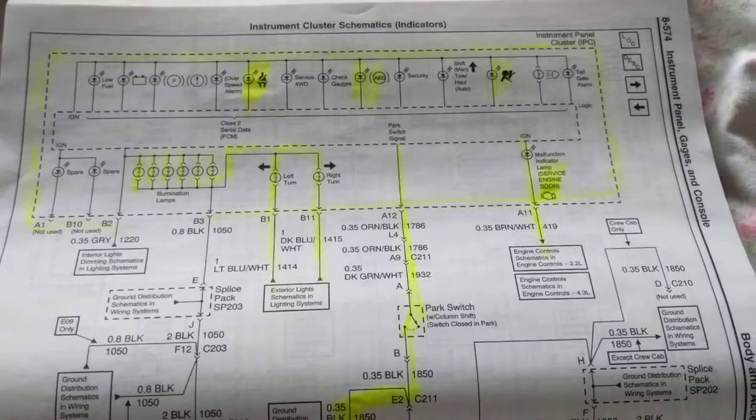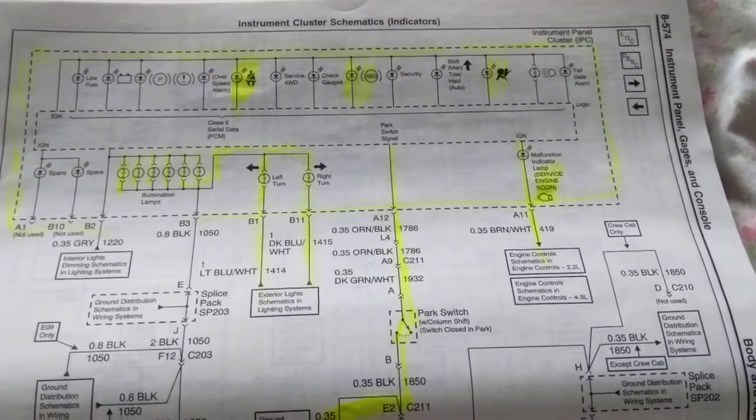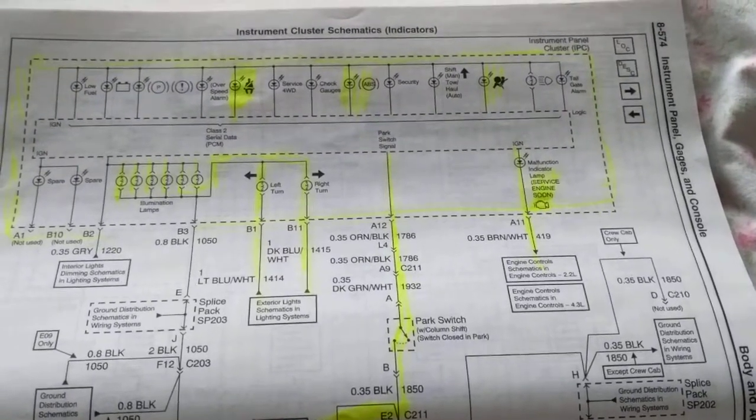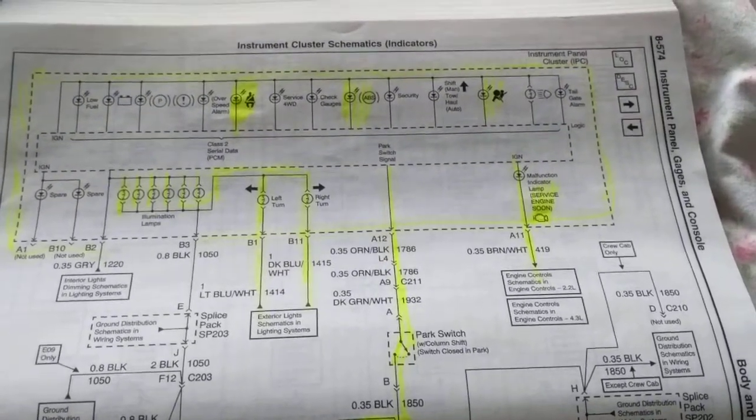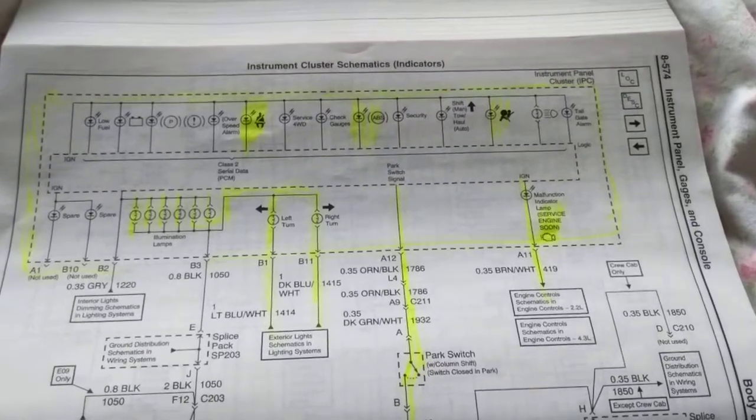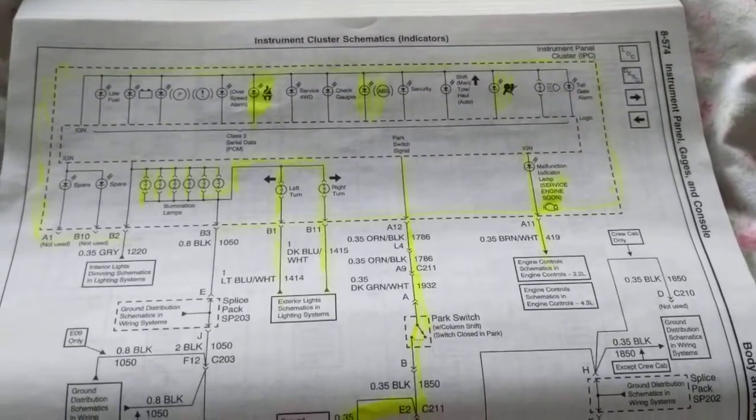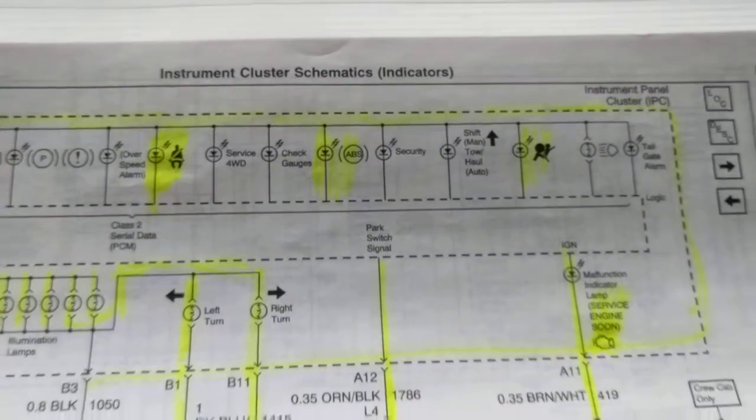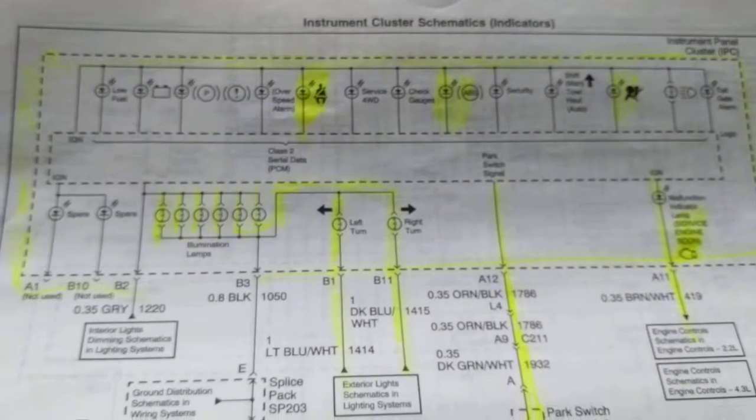And what's the importance of all these symbols that we always see when we start the car in run position or accessories? What's the purpose of all these lights always telling us these things? First of all, the instrument cluster panel is obviously on the dashboard.